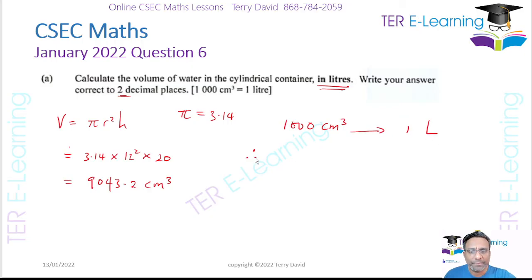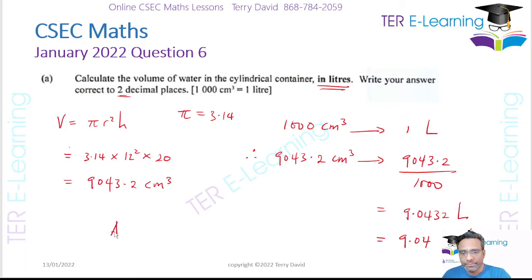Therefore if you want to get 9043.2 cm³ and convert that to liters, all you need to do is divide by 1000. So that's 9043.2 divided by 1000. They want the answer to two decimal places, so this is going to give me 9.04 liters.